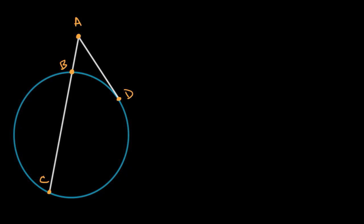What we're going to do in this video is prove that if we have a secant and a tangent that intersect outside of the circle, that the angle formed between them, let's say that has measure of x, is going to be half the difference of the measures of the arcs that they intersect.